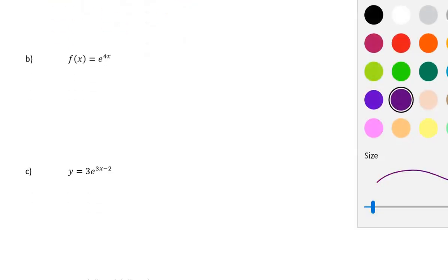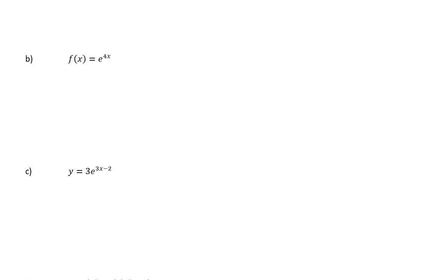Let's try another one: f(x) is equal to e to the power of 4x. So f′(x) — the outside function is e to the whatever, so it's just e to the 4x, multiplied by the derivative of the inside function, which is 4x, which differentiates to 4. So the derivative is 4e to the 4x.